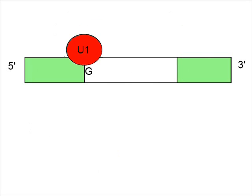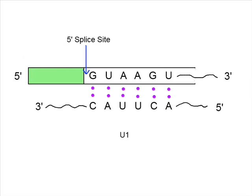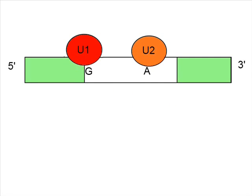First, U1 recognizes and binds to the 5' splice site via base pairings. Next, U2 binds to the branch point sequence and forms part of the catalytic center. The other part is made up by U6. This step requires ATP hydrolysis.